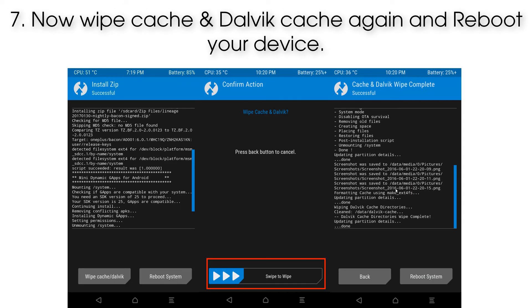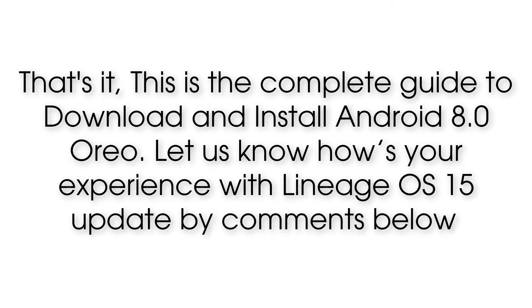Step 7: Now wipe Cache and Dalvik Cache again and reboot your device. That's it — this is the complete guide to install Android 8.0 ARIA via Lineage OS 15. Let us know how your experience is with the update in the comments below.